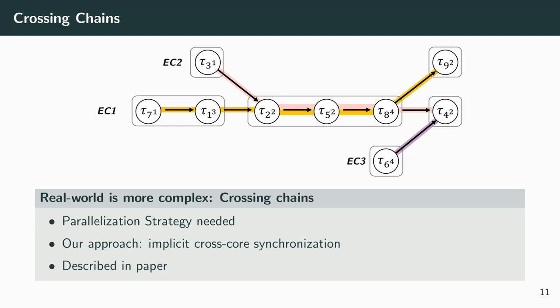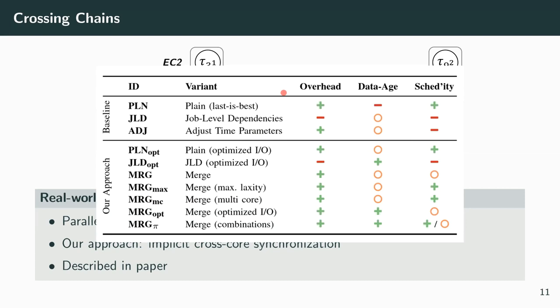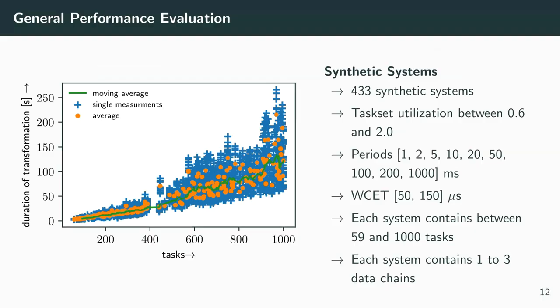There are a lot of situations, so we came up with many variants we wanted to compare. There are some variants known from literature that we wanted to compare: most importantly PLAIN, which is the last-best semantic introduced before, JLDs with explicitly synchronized jobs, and some optimizations and merged variants and combinations of those. We will discuss them a bit later.